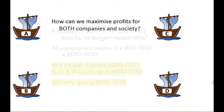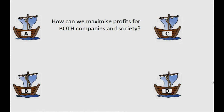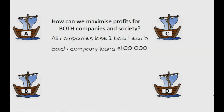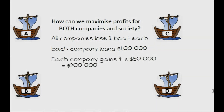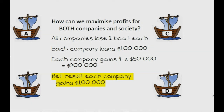And now for a bonus question: how can we maximise profits for all of our companies and for society? If all companies lose one boat each, each company will lose $100,000 because of lost profit. However, each company will gain four lots of $50,000 because of the extra fish in the ocean and the increased ease they can be caught, so each company gains $100,000, meaning the gain for society is $400,000. The problem is that this relies on trust — if one company doesn't lose a boat while all the others do, they will make an extra gain through their dishonesty.